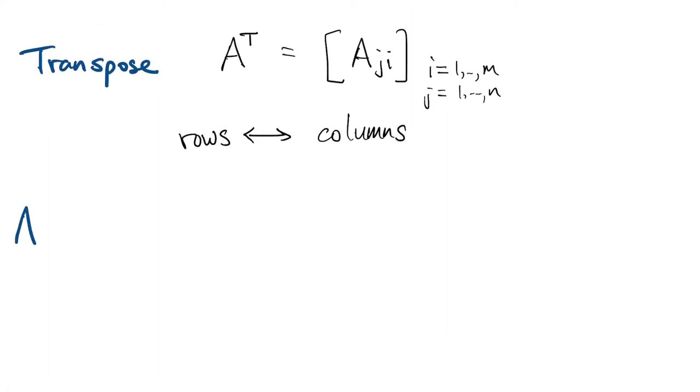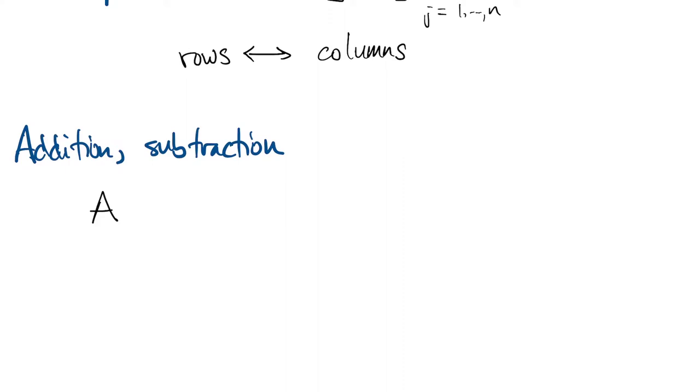Addition and subtraction of matrices is very simple. The sum or difference of two matrices requires that the matrices be the same size, the same number of rows and columns. Then you just add or subtract element-wise.